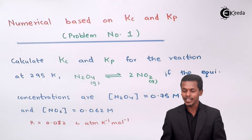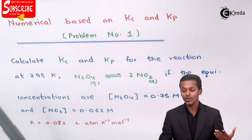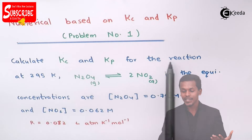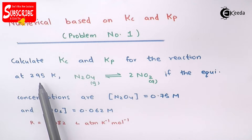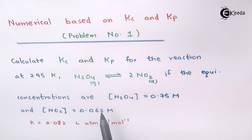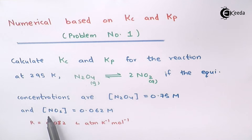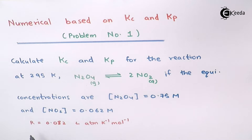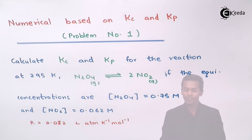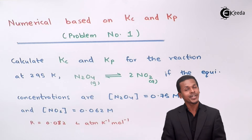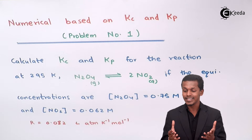This is numerical problem number 1, based on Kc and Kp. We have to calculate Kc as well as Kp for the reaction given below at 295 Kelvin. The equilibrium concentration of N2O4 is given as 0.75 molar and the concentration of NO2 is given as 0.062 molar. The gas constant R is given as 0.082 liter atmosphere per Kelvin per mole.